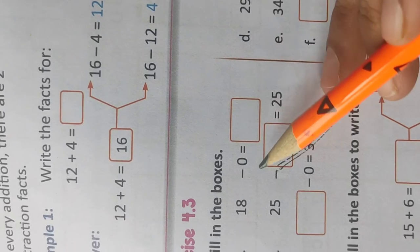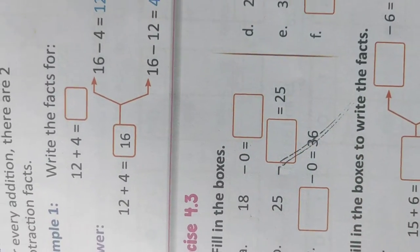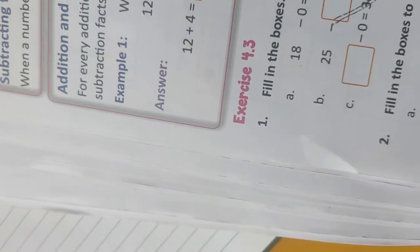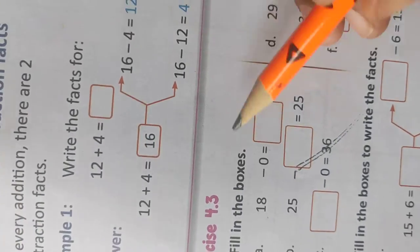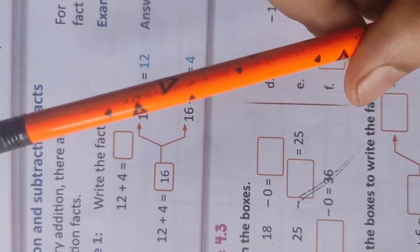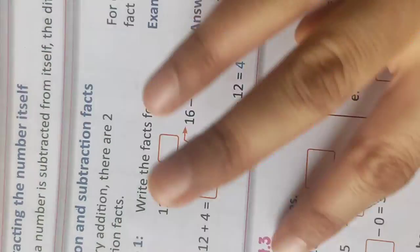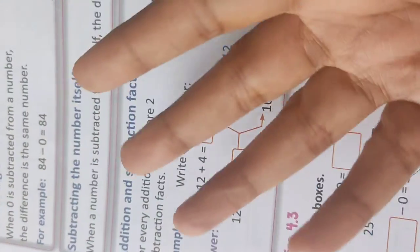Once we subtract any number from the given number, either we do backward counting or we do forward counting. But what if I say there is no need of even counting? That's quite easy to understand. I do have one pencil, right? If I gave away this pencil to anyone, I would be left with nothing. Nothing means 0.